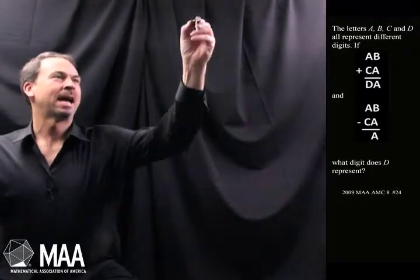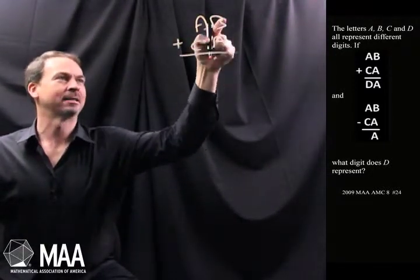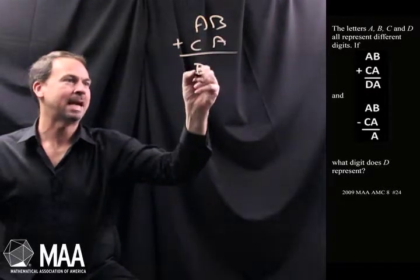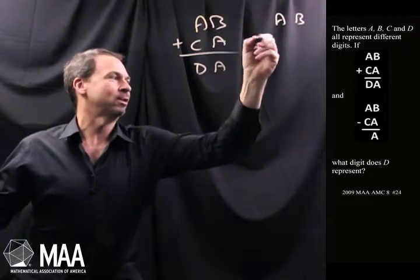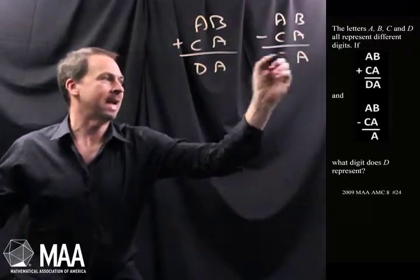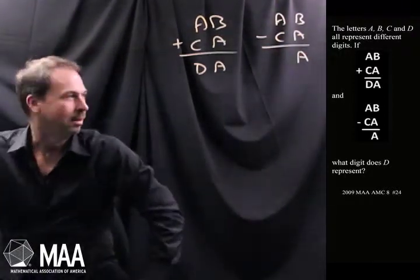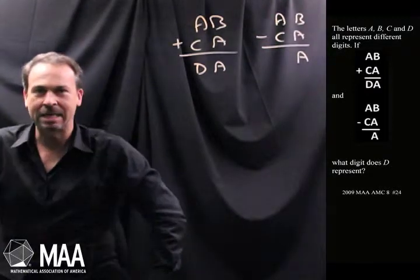If AB plus CA equals DA, so it's an addition problem, and a subtraction problem AB minus CA happens to equal just A, the question is what digit does D represent?